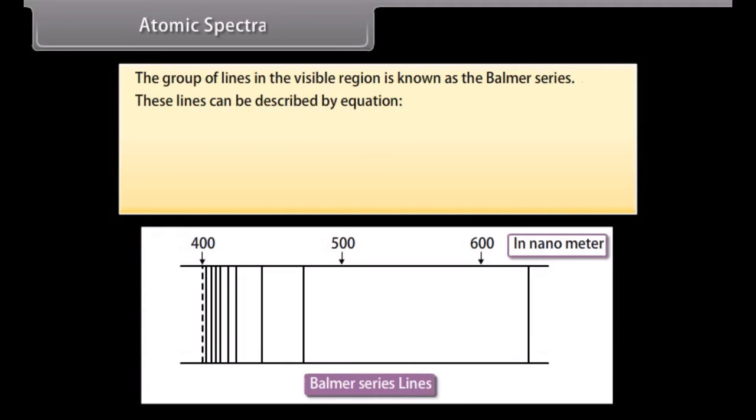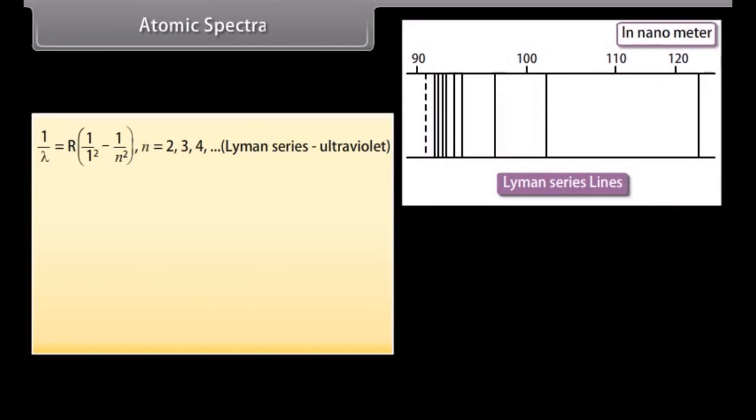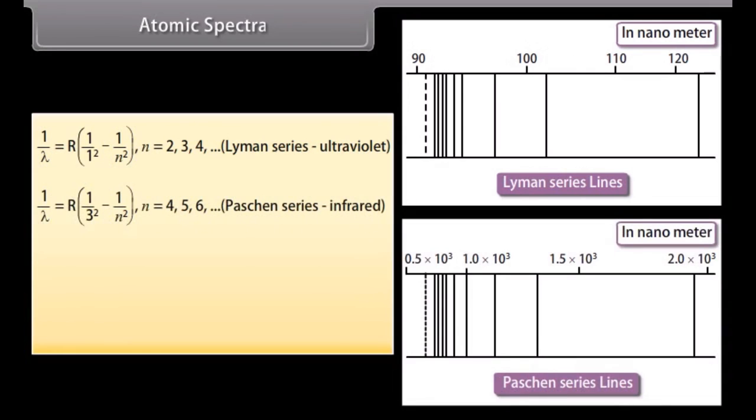These lines can be described by equation 1 upon lambda equals R 1 upon 2 square minus 1 upon N square. Here value of N may be 3, 4, 5, and so on. Where R is Rydberg constant having value 1.0973732 into 10 raised to the power 7 per meter. The other series of lines exist outside the visible region are Lyman series which is given by 1 upon lambda equals R 1 upon 1 square minus 1 upon N square. Here value of N may be 2, 3, 4, 5 and so on. Paschen series which is given by 1 upon lambda equals R 1 upon 3 square minus 1 upon N square. Here value of N may be 4 and so on.